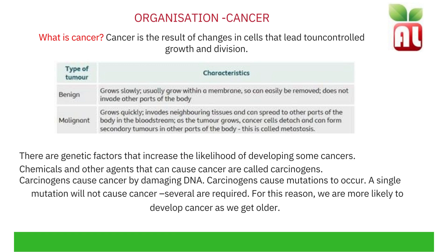There are genetic factors that increase the likelihood of developing some cancers. Chemicals and other agents that can cause cancer are called carcinogens. Carcinogens cause cancer by damaging DNA and causing mutations to occur. A single mutation will not cause cancer — several are required. For this reason, we are more likely to develop cancer as we get older.